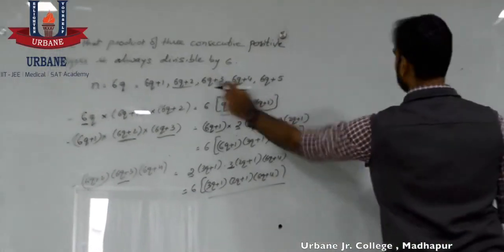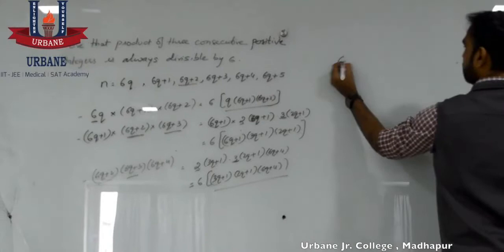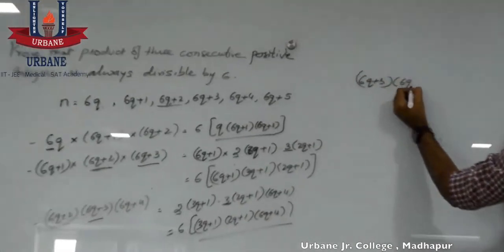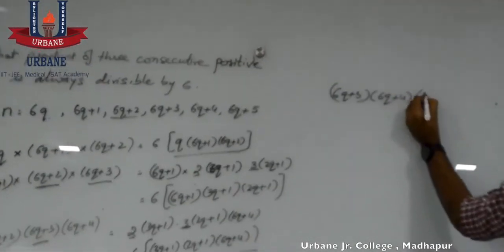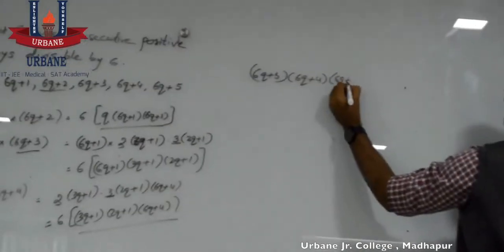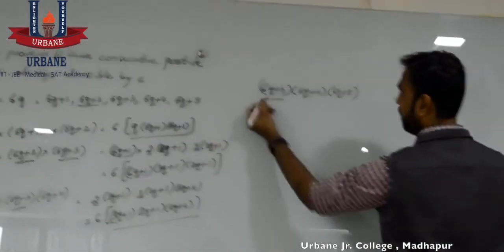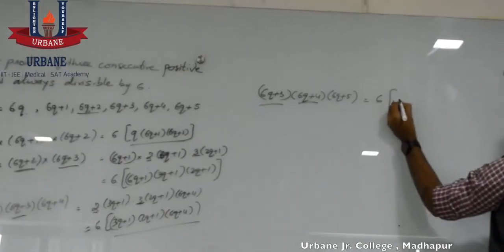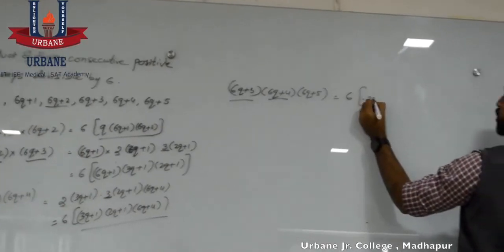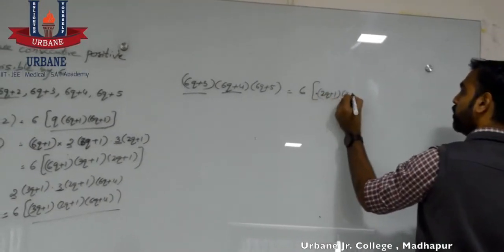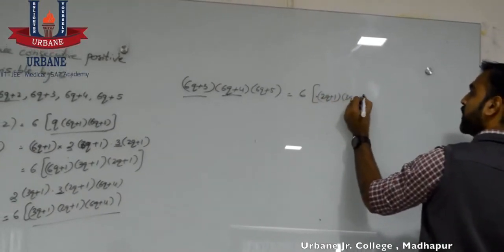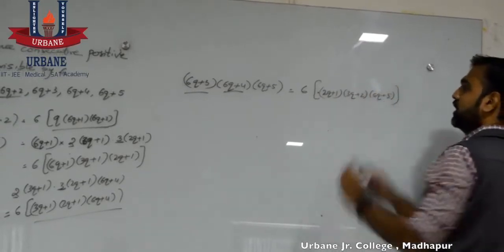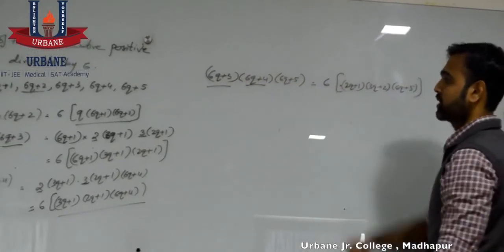Now let's start from 6q plus 3. So 6q plus 3 multiplied by the consecutive integers 6q plus 4 and 6q plus 5. We take 3 common from the first and 2 common from the second. We get 6 times 2q plus 1 into 3q plus 2 into 6q plus 5, which also says that this value is divisible by 6.